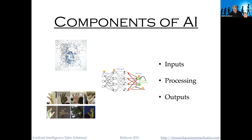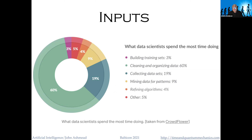Now let's look at the components of AI — what does an AI system actually do? It has inputs, processing, and outputs. Like everything else real in this world, most of your time is spent on scut work: data scientists spend most of their time cleaning and organizing data — whether from a Twitter feed, medical instruments, or a telescope — because that data is seldom in a state where it can just be fed to an AI system. Most practical AI work is dull but necessary data mining. What we think of as classic AI work is only about a sixth of the time data scientists actually spend.